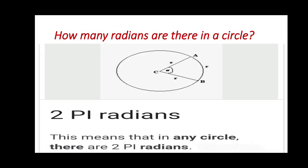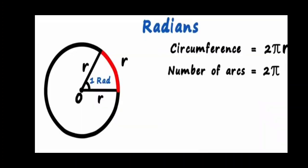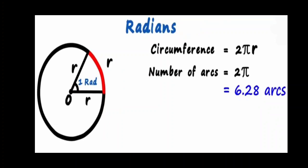The next question that arises is: how many radians are there in a circle? There are 2π radians in a circle. The formula for the circumference of a circle is 2πr, so there are 2π number of arcs in a circle. Substituting π as 3.14 and multiplying by 2, we get 6.28 arcs.